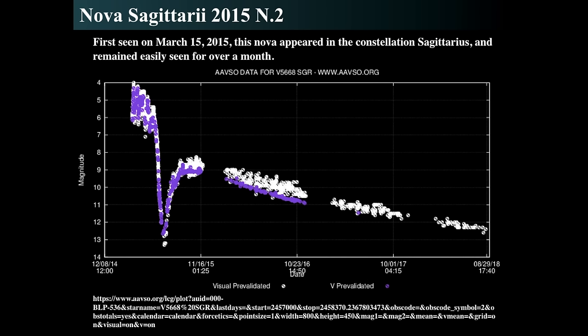The strong dip in brightness is likely due to dust interactions that blocked the light. Once that dust was dissipated or blown away, we could see the underlying bright material as it brightened back up. It got as bright as 4th magnitude, then the dusty material cooled rapidly and blocked the light, dropping it to 13th magnitude, then came back up as the dusty material was dispersed.